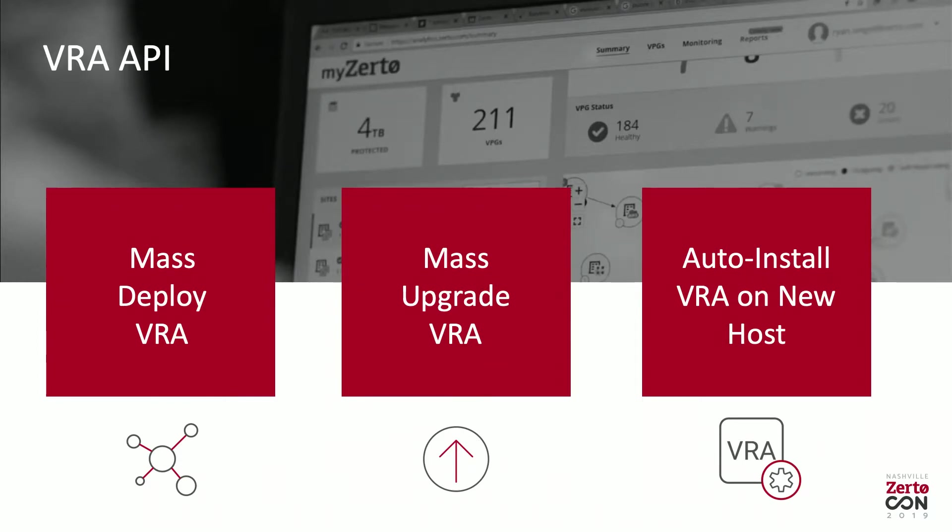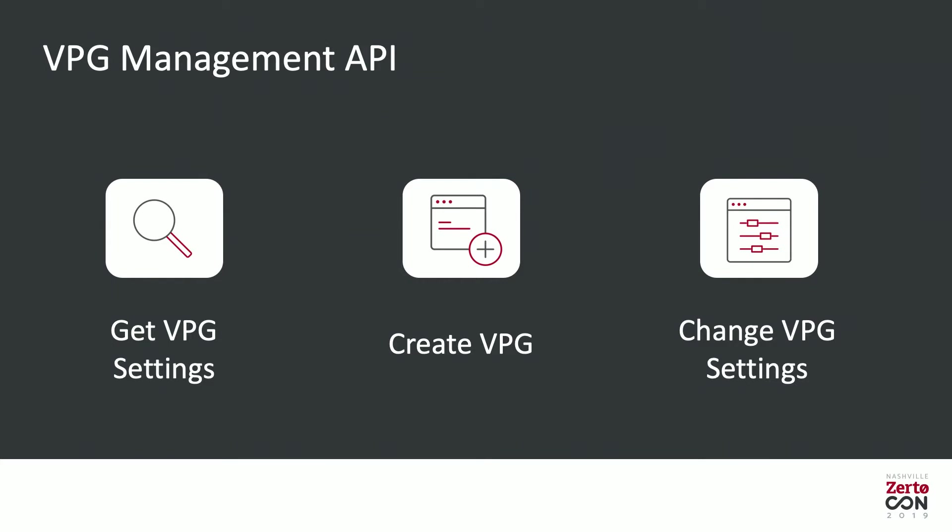The VPG Management API is a more complex one — it allows you to change settings of existing VPGs and create new VPGs. VPGs contain a lot of settings, so what you do is get a framework in JSON or XML format of all those settings, change or add to them, then send that JSON to the API. You can do that for multiple settings or multiple VPGs and then commit those changes. You first send the settings, then commit, and then it applies to the VPGs.